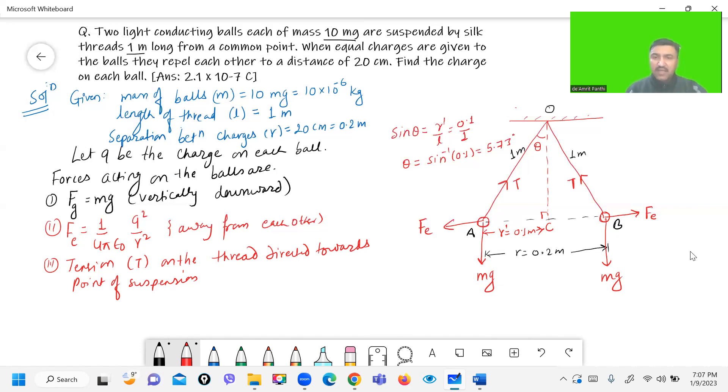So we can resolve tension T into two components. One component perpendicular to the line joining two charges. The angle between T and this perpendicular line is theta, alternate angles. So the component of T along this line is T cos theta and another component is along the line joining two charges, it is T sine theta, similarly for ball B.